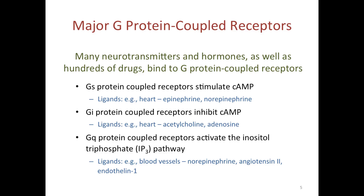There are multiple types of G-proteins that are very important in pharmacology. We have the G-S proteins, found in the heart, where ligands such as epinephrine and norepinephrine bind and stimulate an increase in cyclic AMP. We also have G-I proteins, which are inhibitory G-proteins. These are coupled to receptors where ligands such as acetylcholine or adenosine, when they bind, cause an inhibition of cyclic AMP formation.